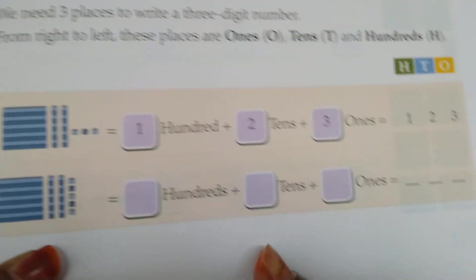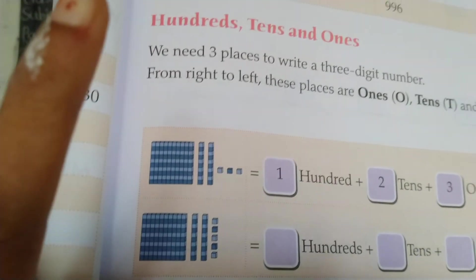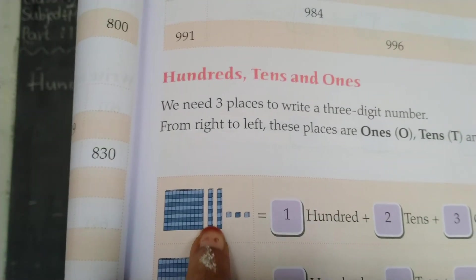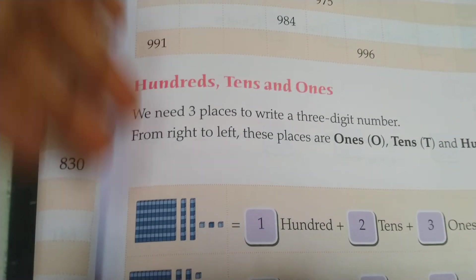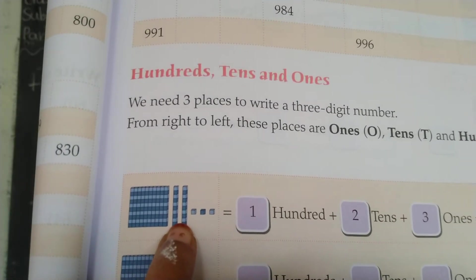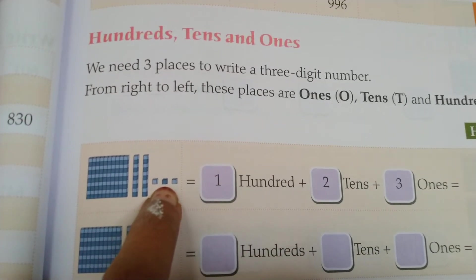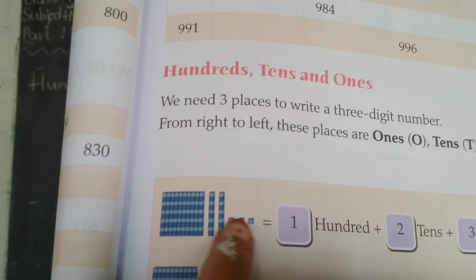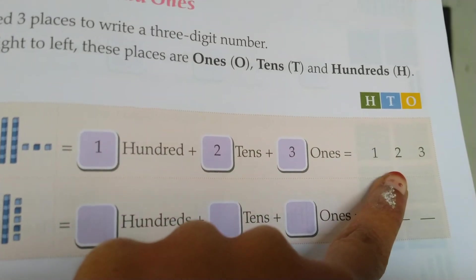One example is given. This total box represents hundreds — there is only one, so here we write 1. Next, how many vertical strips are there? That represents tens. And the individual small pieces represent ones. So: one hundred, two tens, three ones — the total number is one hundred and twenty-three, that is 123.